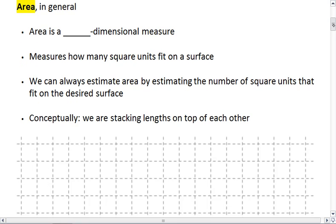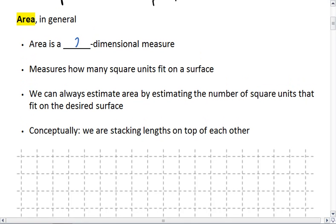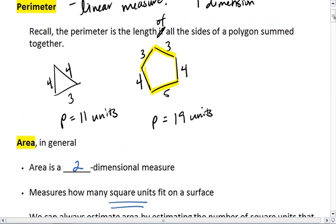Area is a little bit different. Area is a 2-dimensional measure. It measures how many square units fit on the surface. So here we can break down this length into 5 chunks. Here we get 4 and 3, 3 and then 4. So we get these lengths here.